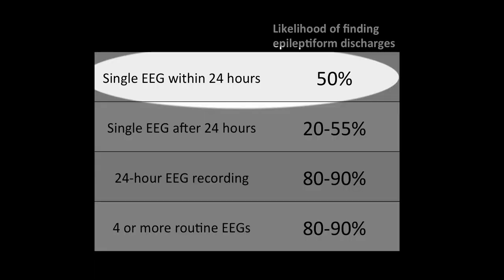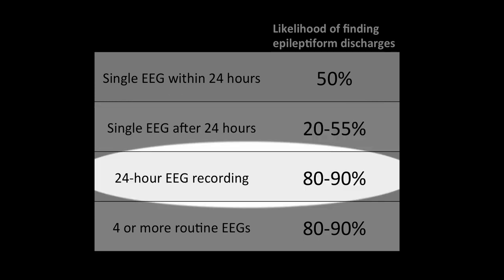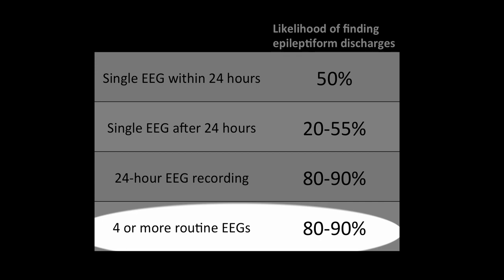It is useful to think about the diagnostic yield of EEG. In studies of patients with epilepsy, the likelihood of finding an epileptiform discharge in a single EEG within 24 hours of a first seizure is about 50%. If the EEG is done more than 24 hours after the first seizure, the likelihood may drop somewhat, meaning half or more of patients with epilepsy might have a normal routine EEG. On prolonged 24-hour EEG recording, the likelihood is much higher, in the range of 80 to 90%, though 10 to 20% of the time even prolonged EEG can be normal. Several routine 30 to 60-minute EEG recordings can produce the same yield as a 24-hour recording, but may be less practical.